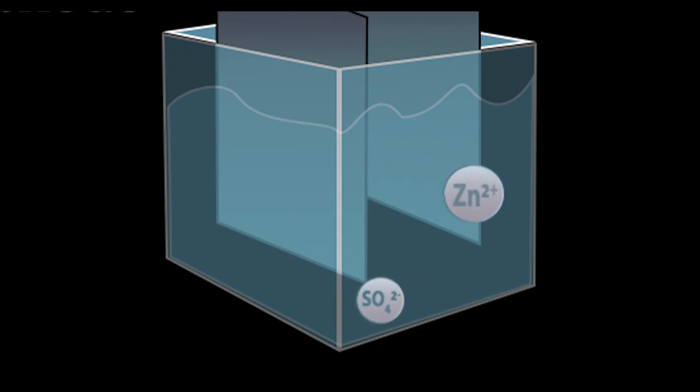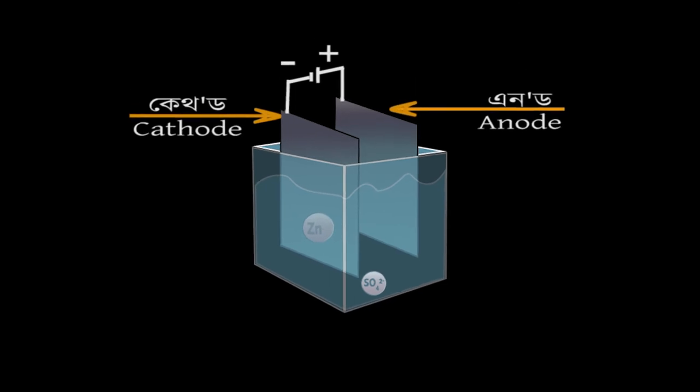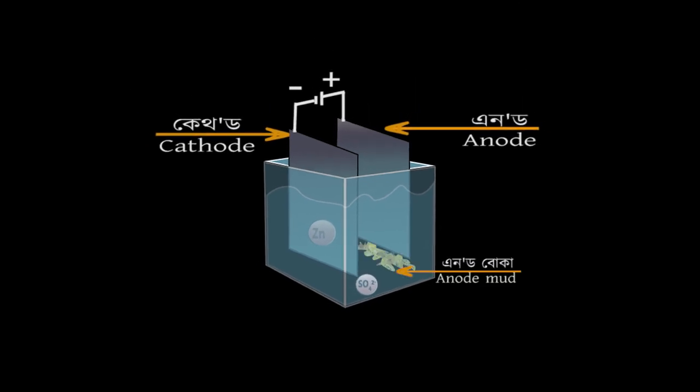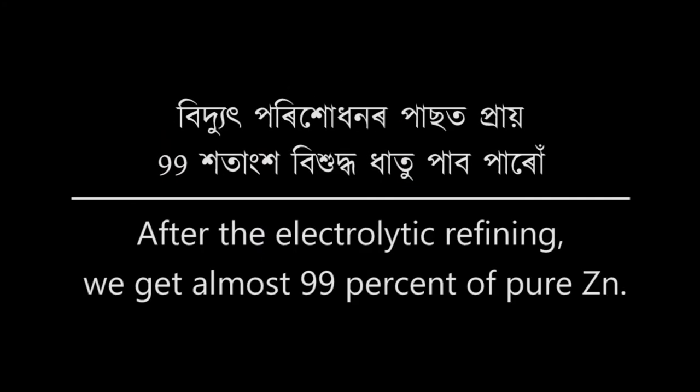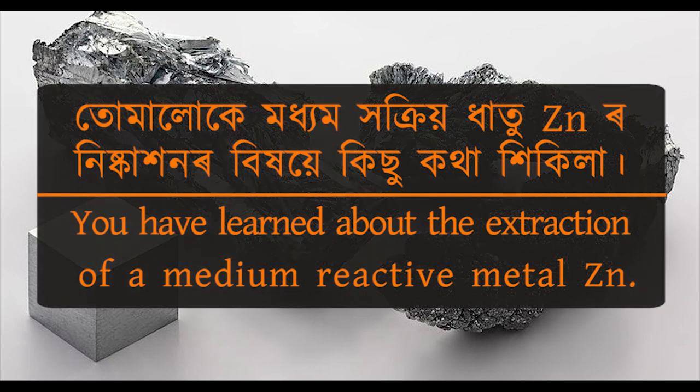The insoluble impurities settle down at the bottom of the anode as anode mud, and the soluble impurities go to the solution. After the electrolytic refining, we get 99 percent pure zinc. So students, today we have learned about the extraction of a medium reactive metal, zinc.